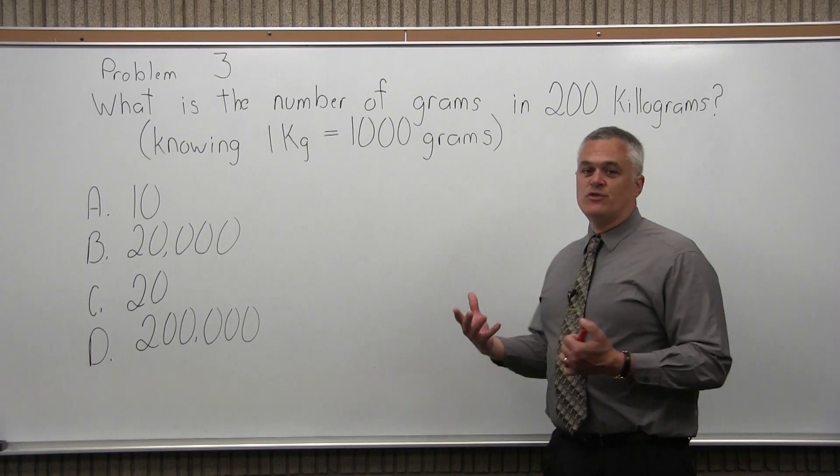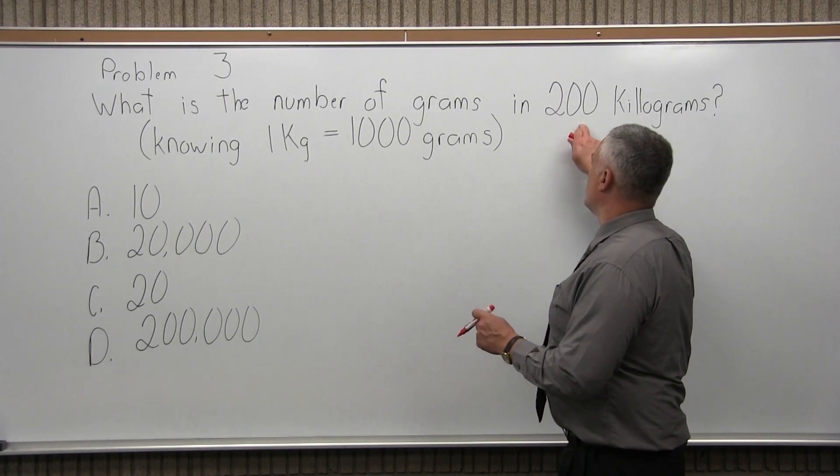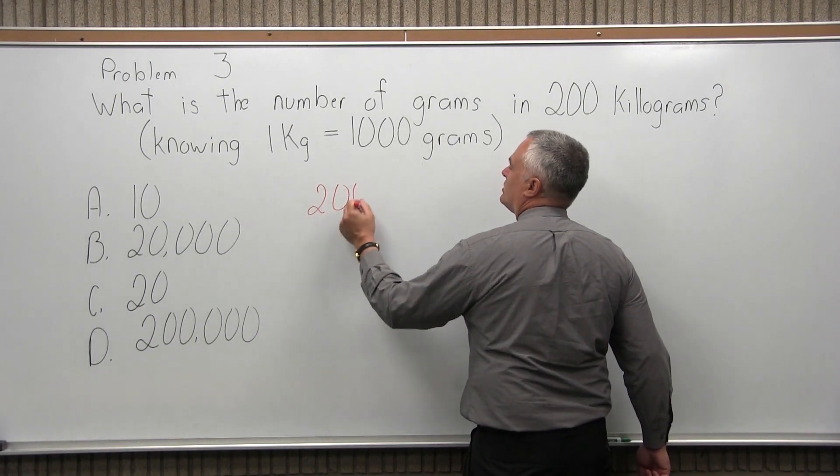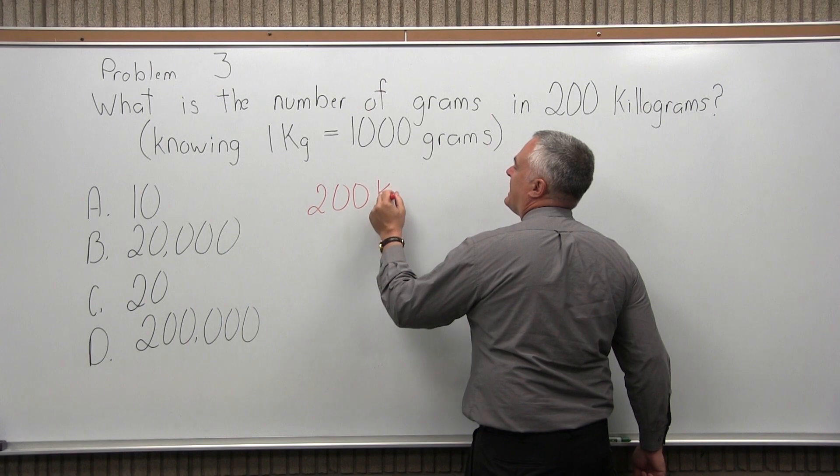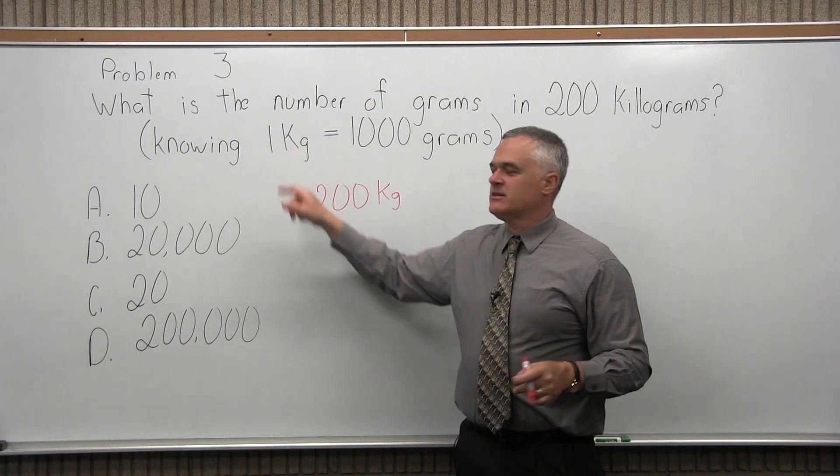So, when you have a conversion of units like this, what I like to do is start with the number they give you, 200. Make sure you include the units of measure. So I'm going to put 200, and I'm going to put kg because that's the symbol for kilogram, and it's used in the hint that's given.